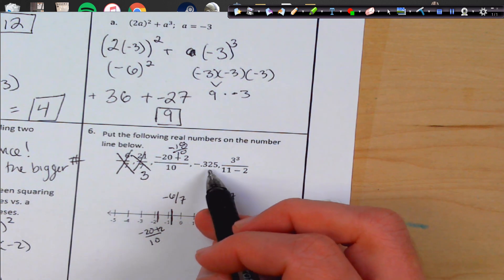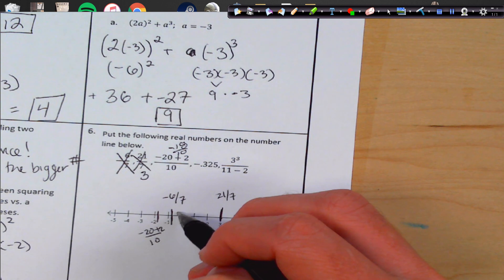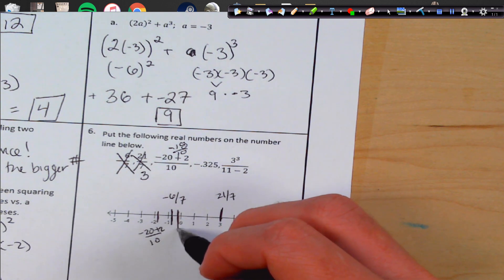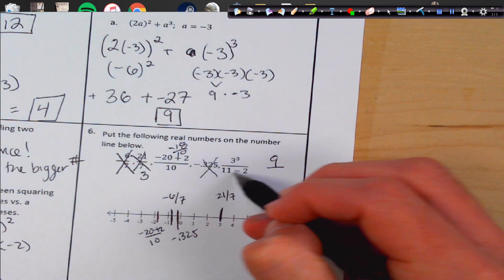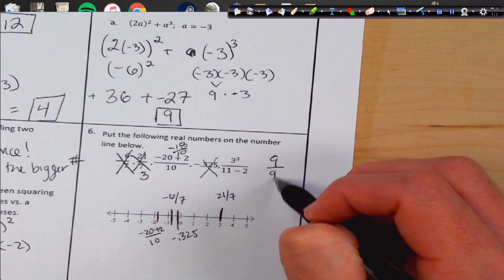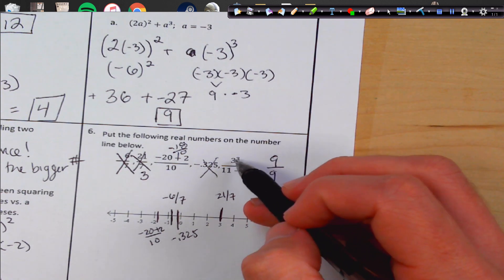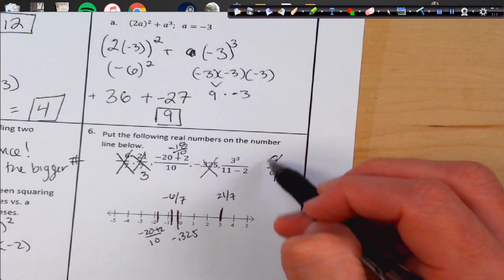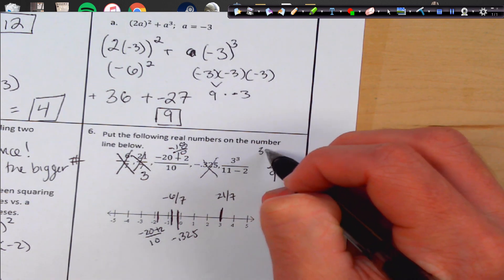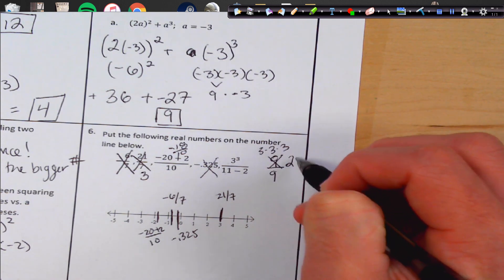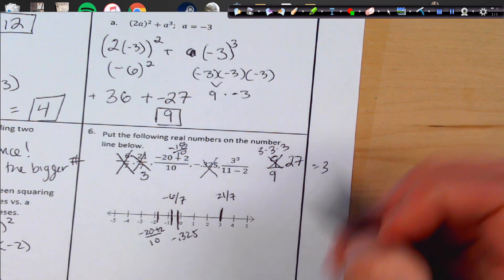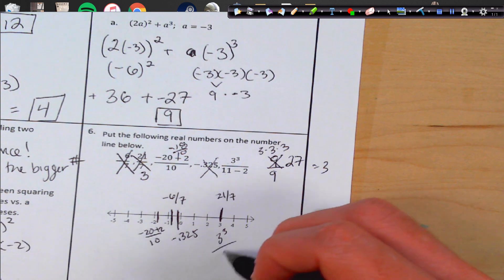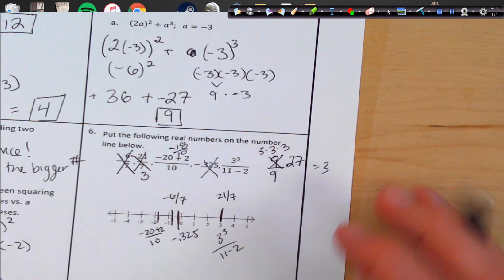Negative 0.325 is very close to 0. So I'm going to say it's right about there. And 3 squared is going to be 9. 11 minus 2 is 9. Oh wait, did I make a mistake? 3 squared is not 9. It is going to be 3 times 3 times 3, which would be 27 over 9. And 9 goes into that 3 times. So we actually get the same value right there for that one.